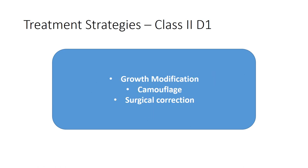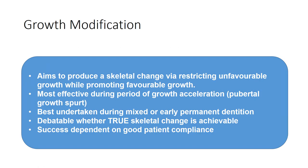There are three treatment strategies in Class 2 Division 1: growth modification, camouflage, and surgical correction. Growth modification aims to produce a skeletal change by restricting unfavorable growth while promoting favorable growth. This modality is most effective during the period of growth acceleration, usually the pubertal growth spurt, and is best undertaken during mixed or early permanent dentition. Whether true skeletal change can be achieved is debatable, and success depends on very good patient compliance.